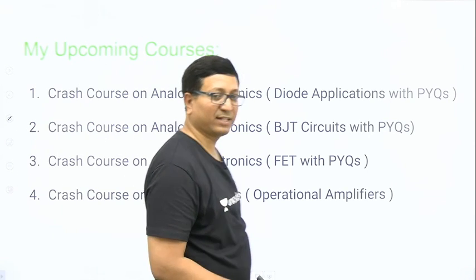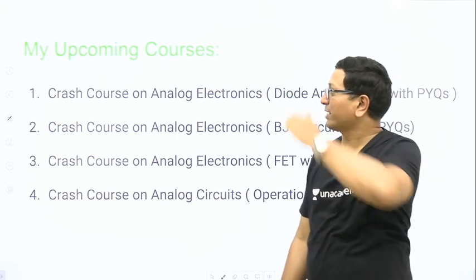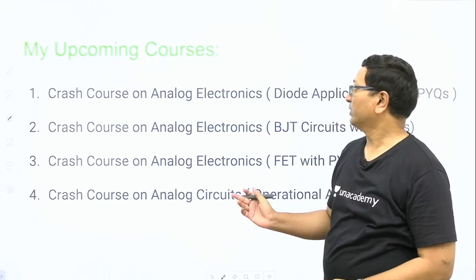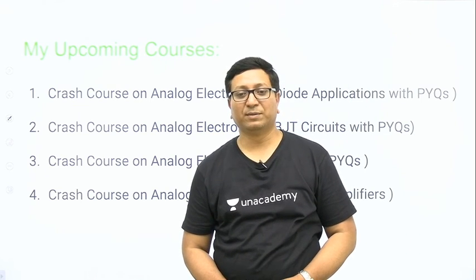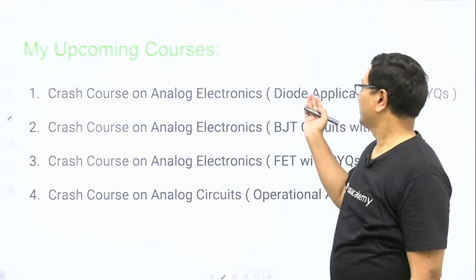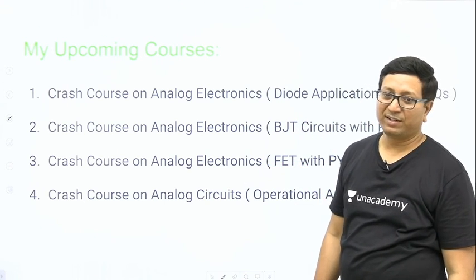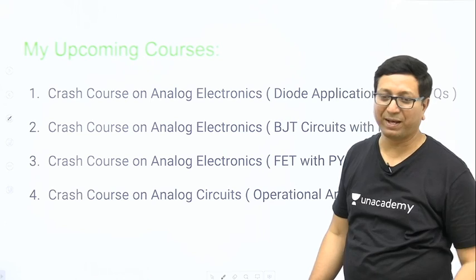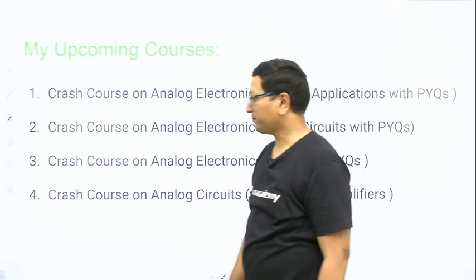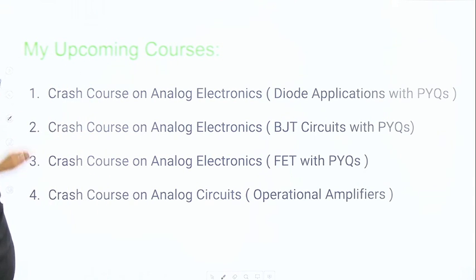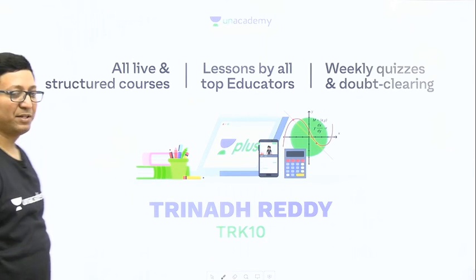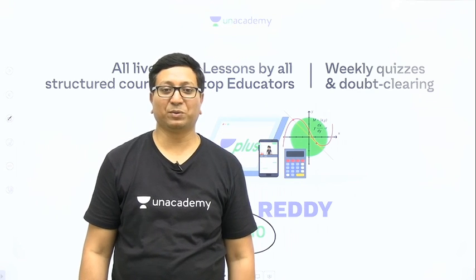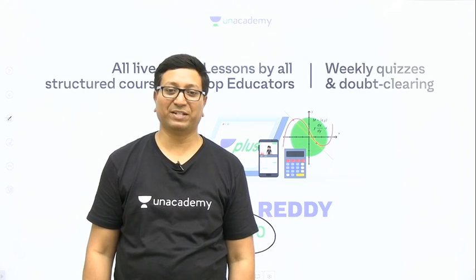My upcoming course: as the GATE exam approaches, I am starting a crash course on analog electronic circuits for GATE 2020. The course is split into four modules — diode applications, BJT, FET, and op-amps. I will cover diode applications and BJT first, then move to modules three and four. To attend online, subscribe to AN Academy and use referral code TRK10 for a 10% discount. Thank you all, best wishes!